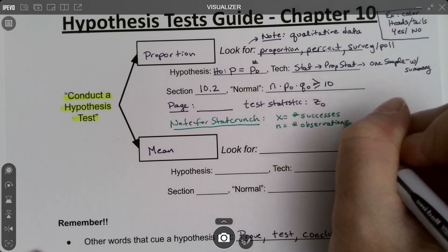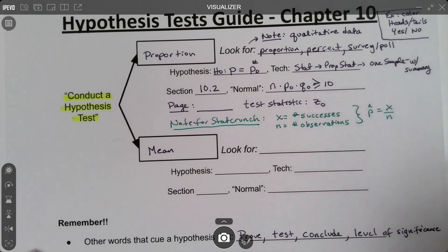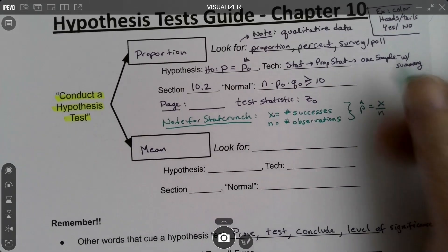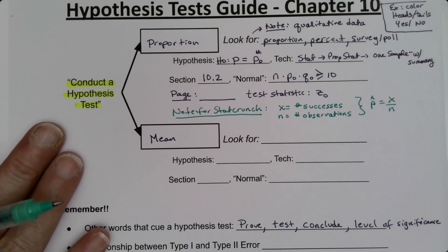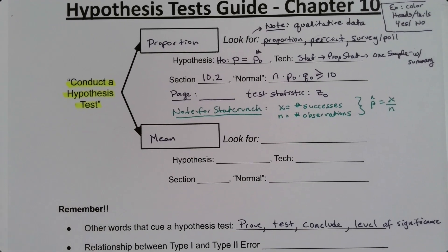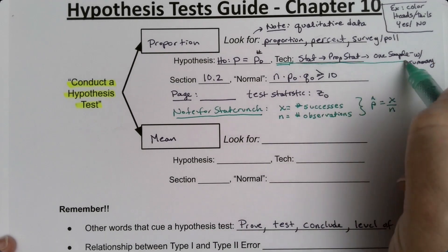n is the number of observations. And we all remember from Chapter 8, hopefully, that p-hat is x over n. But you'll need those two items to be able to run StatCrunch. So to do this proportion stat with summary, you'll need these pieces.